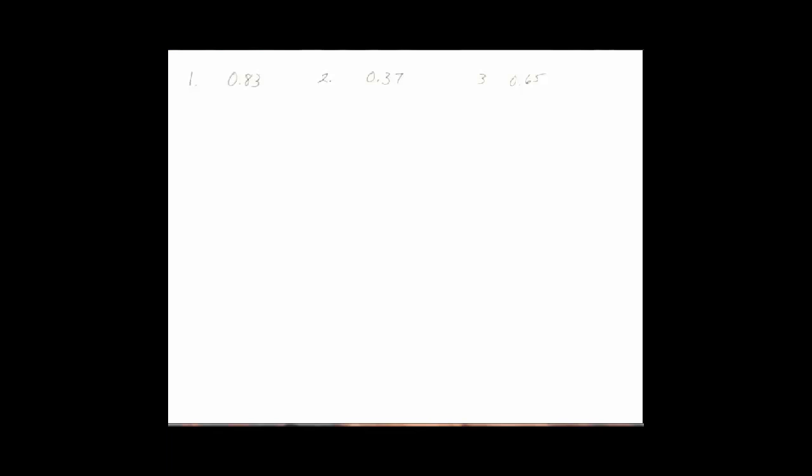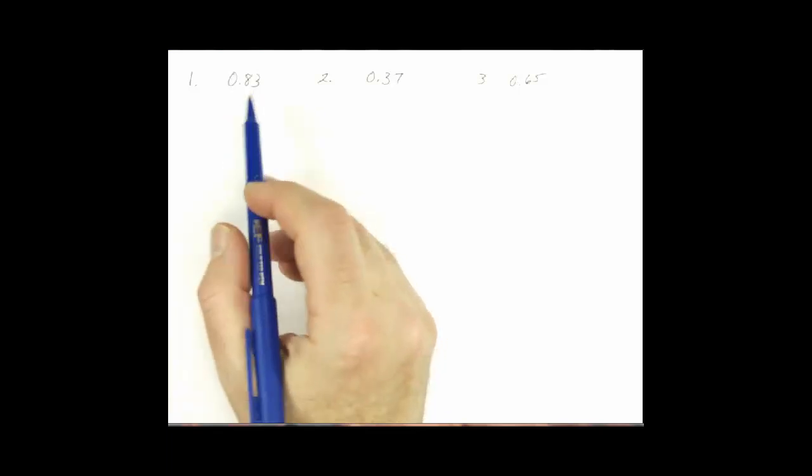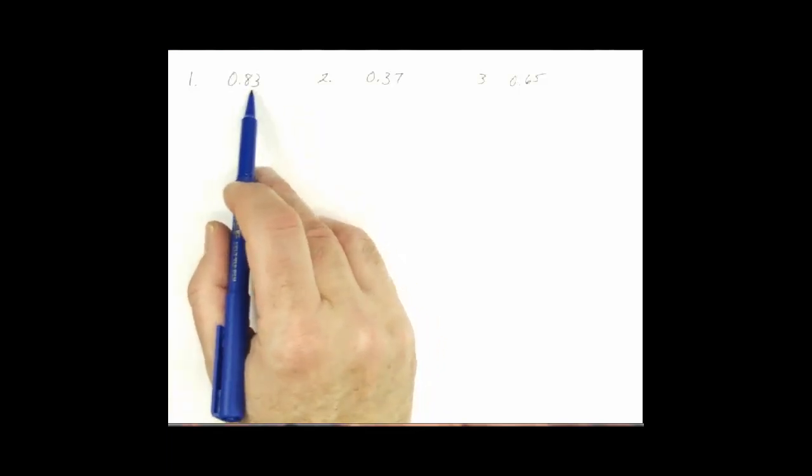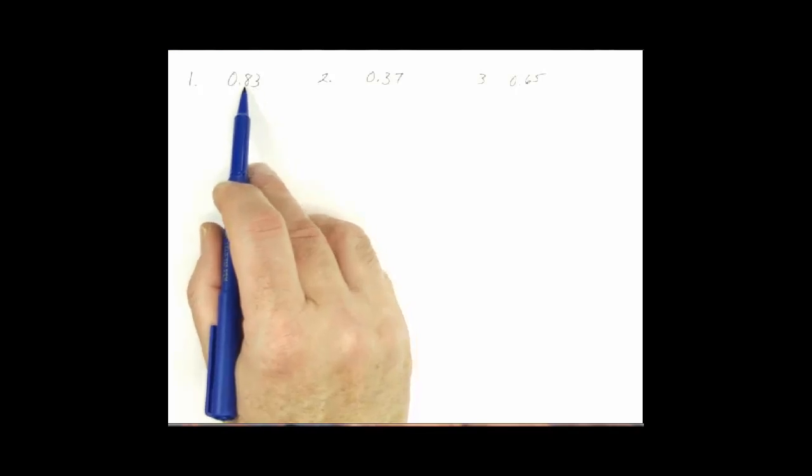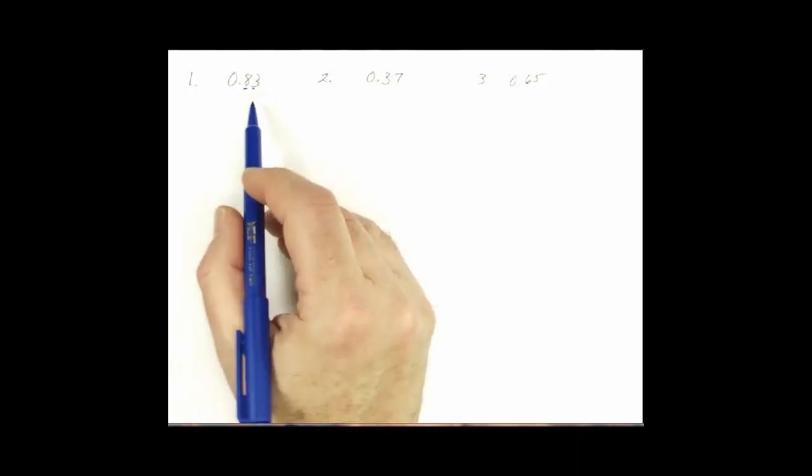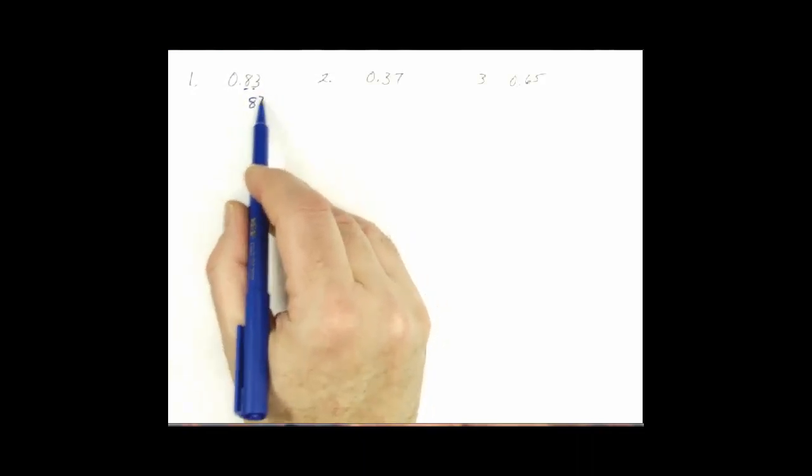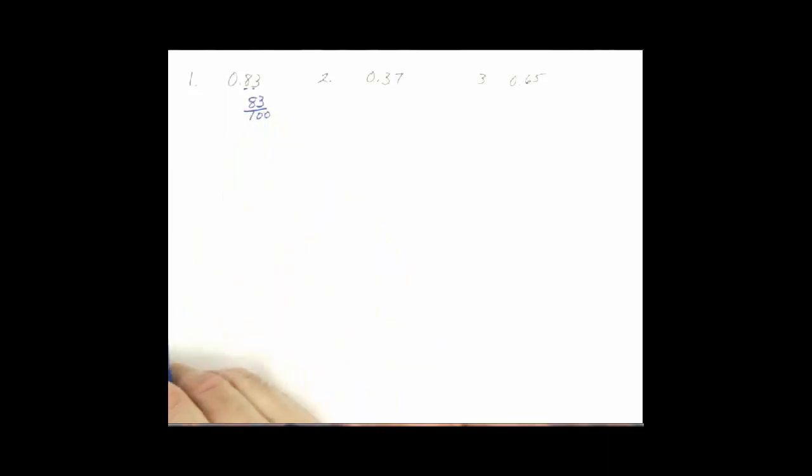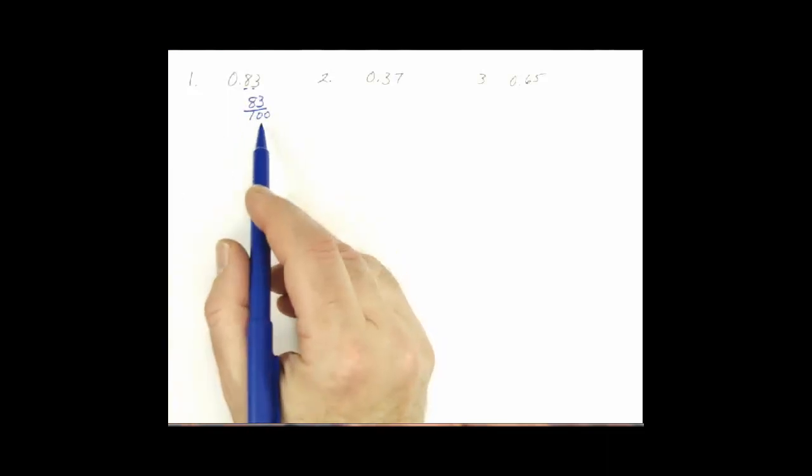Number 1 starts out with 0.83. How I teach this is I just have you read the number. So this would be 83 hundredths. And so when we say it, we write it. 83 hundredths. So we just put 83 over the hundred.